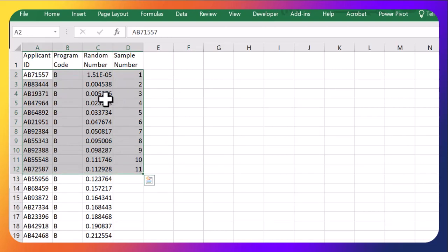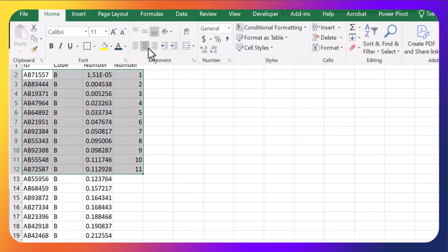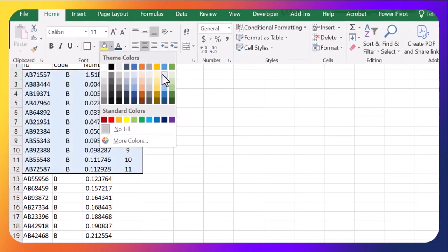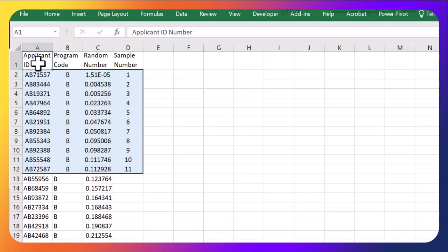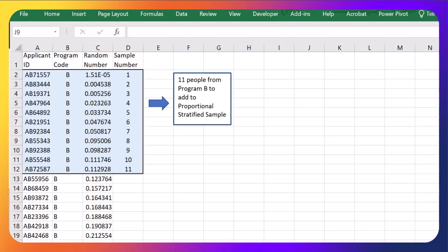So these first 11 are going to be part of my proportional stratified sample. They will be the people from program B that I grab. Beautiful. So there they are. Those are my 11 people to add.